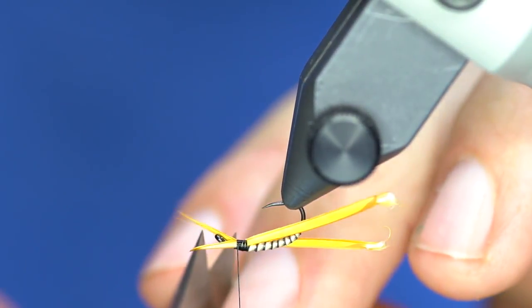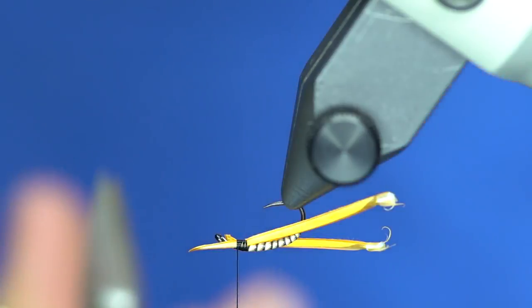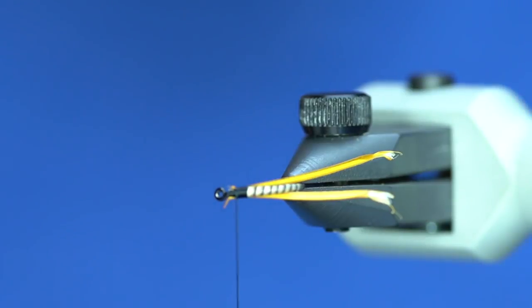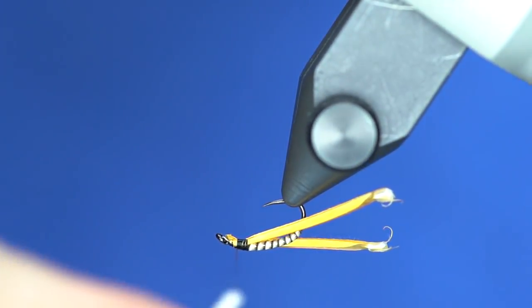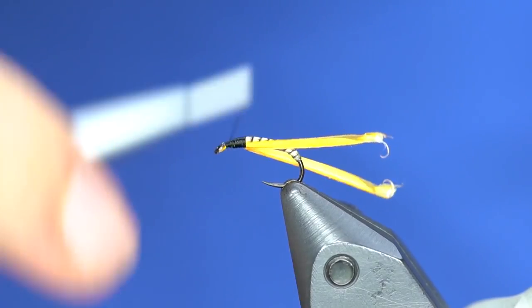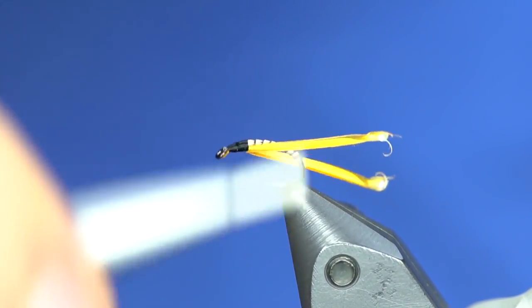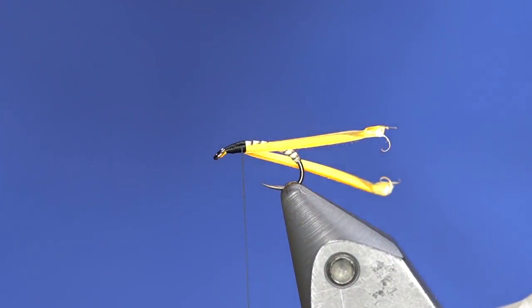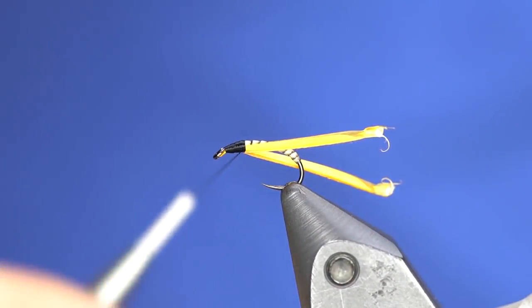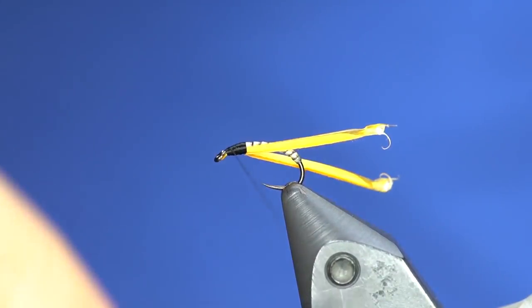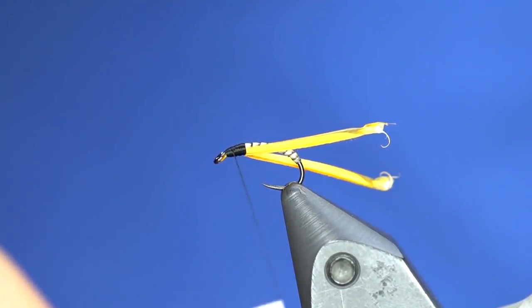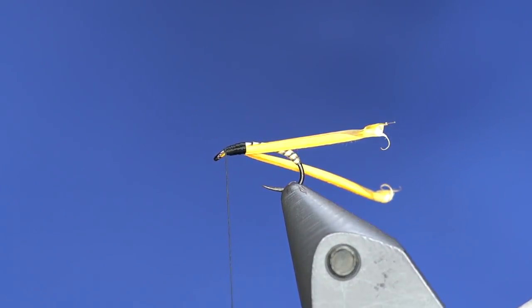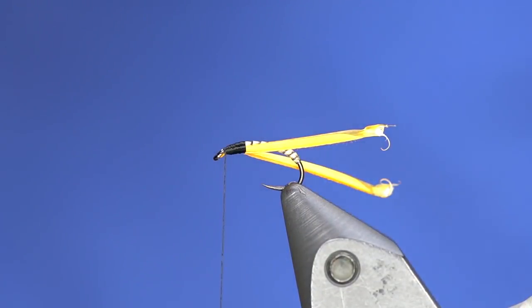I can even come in here and trim these off and then just continue to wrap over those, and that kind of builds up our taper a little bit more. So I'm going to go to the end right before the eye of the hook. You want to build a little bit of a taper because if you don't then your thread wraps will slide off the front, plus we need to still tie in our breathers.